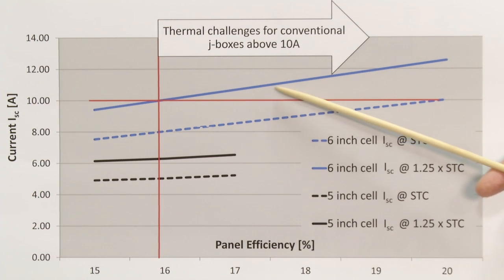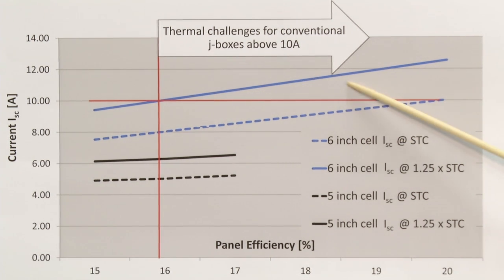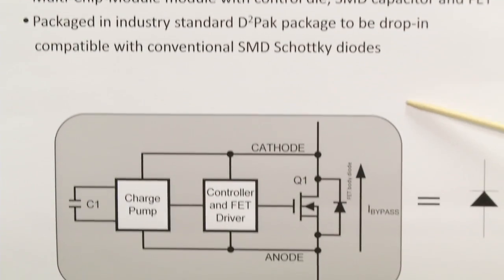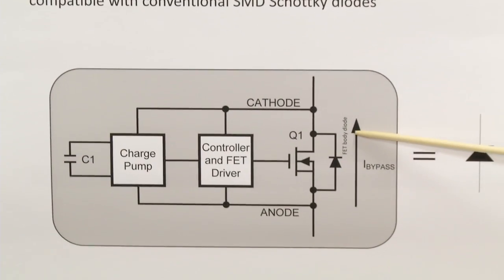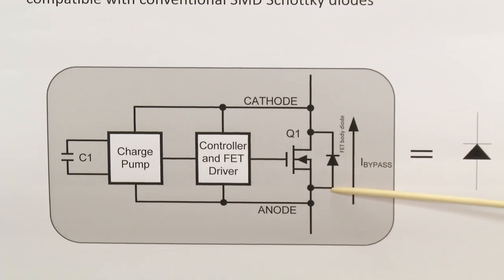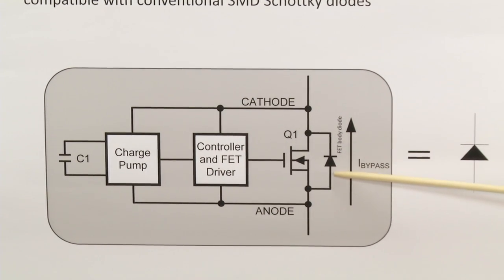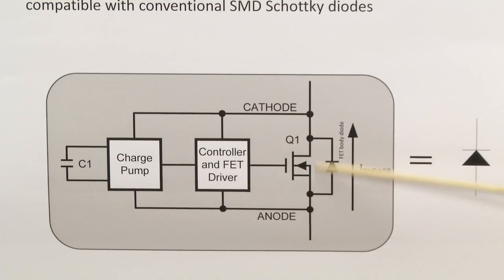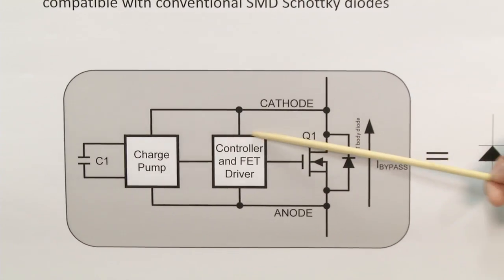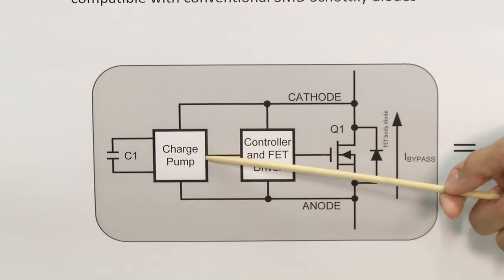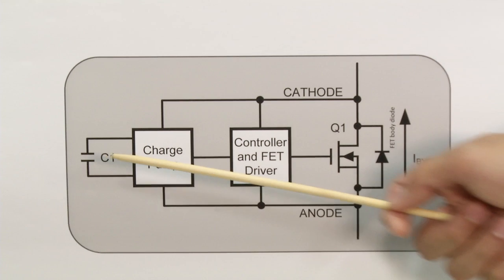This requires a larger heatsink. Our solution is to replace these conventional Schottky diodes with a MOSFET. Our IC includes a MOSFET, a controller, a charge pump, and also a capacitor.